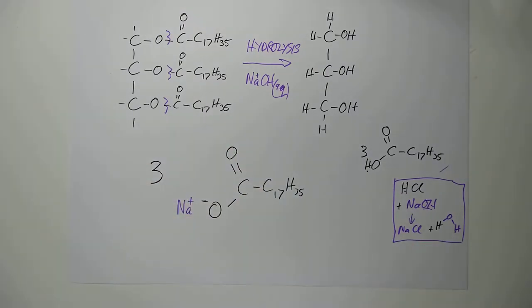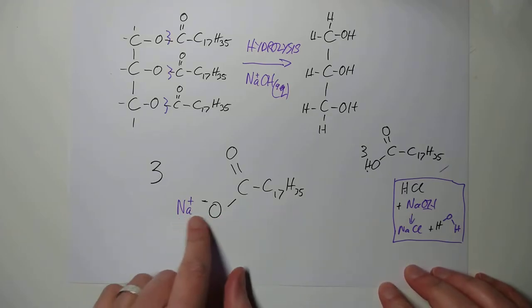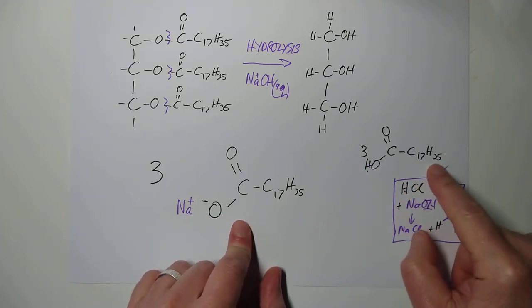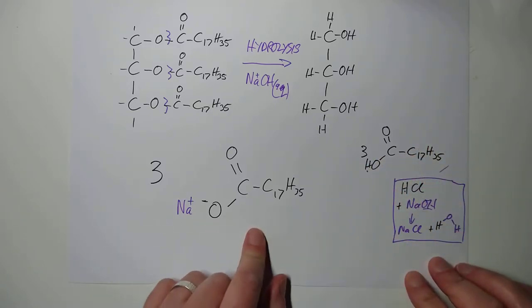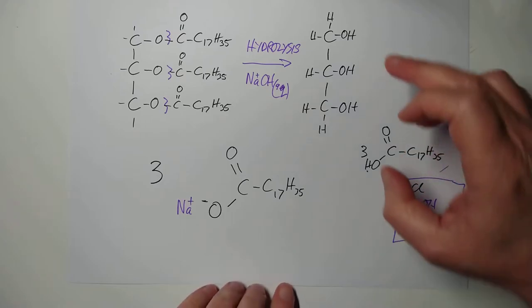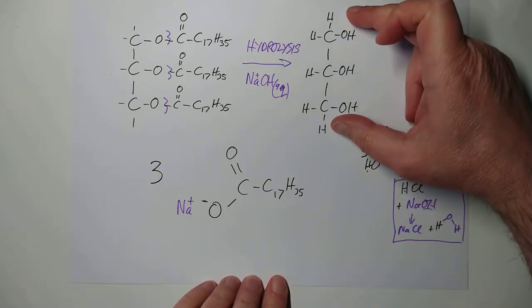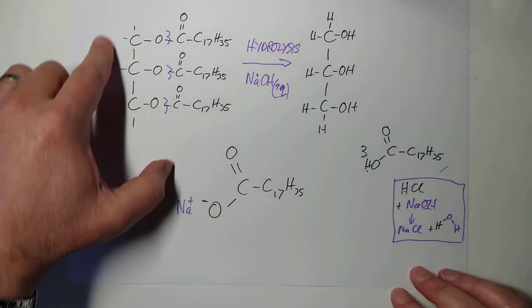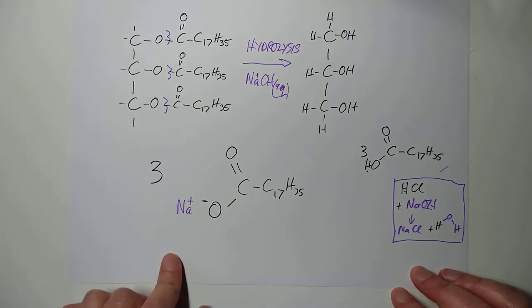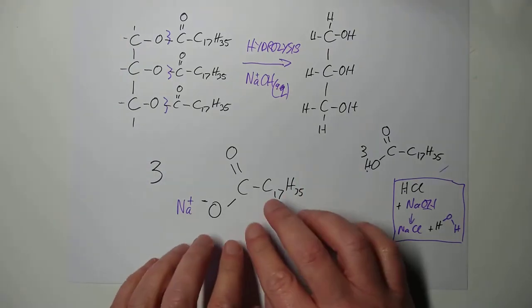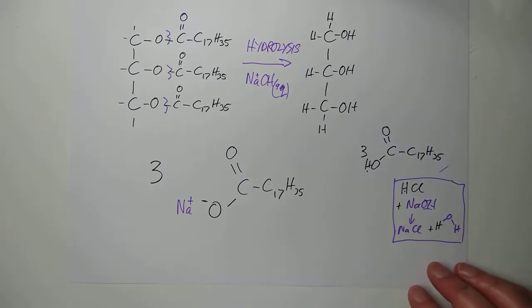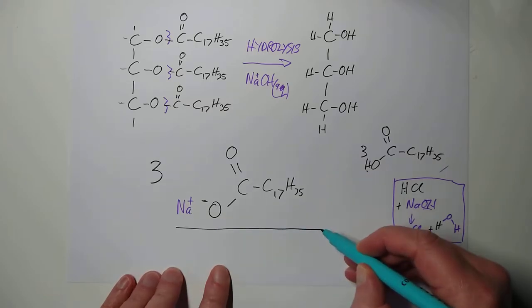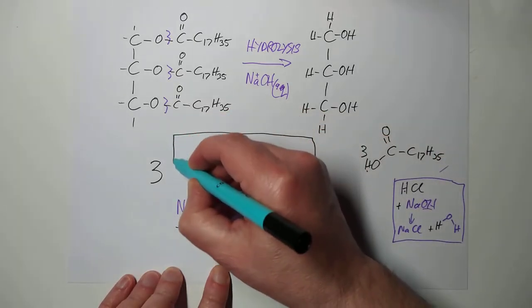So we lose the hydrogen off the acid, and it teams up with the OH to form water, leaving you with an ion. These are carboxylic acids. This is a carboxylate ion. And of course, in the water, we tend to find sodiums with a 1+, so we often represent it as this.